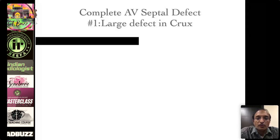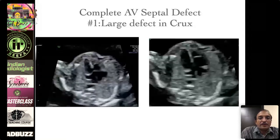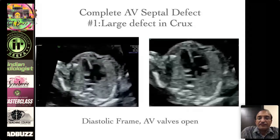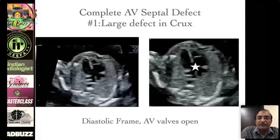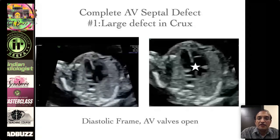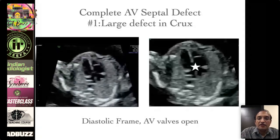Let us see what are the components of the complete AV septal defect. The first is that there is a large defect in the crux of the heart. This is a diastolic frame where the valves are open, and you see a large defect in the crux of the heart with the valves open. So that is the first clue.